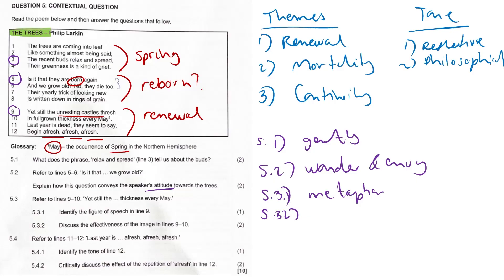5.3.2: The effectiveness of this. The metaphor of unresting castles effectively conveys the power and majesty of the trees as they continually renew themselves. Thrash, it evokes movement, it evokes vitality, showing that even though the trees are stationary and not actually moving, they're alive with energy and growth. It captures the strength and constant renewal of the trees.